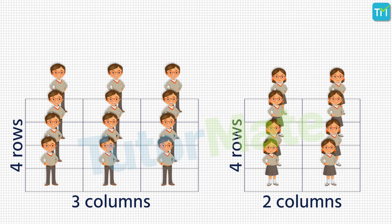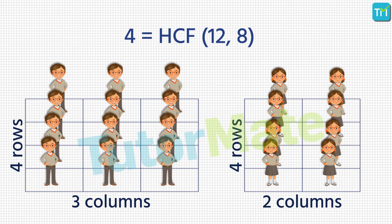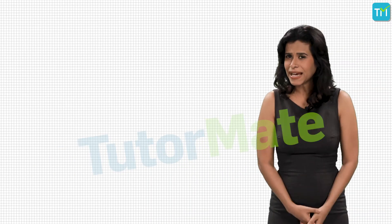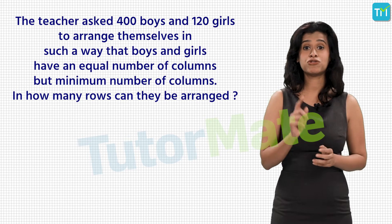That gives a total of 5 columns. We can't divide them into 5, 6, 7, or 8 rows because that would result in unequal rows. So to fulfill all conditions, we divide 12 boys and 8 girls into 4 rows each, giving 3 columns of boys and 2 columns of girls. This gives us 4 as the HCF (highest common factor) of 12 and 8. With that in mind, let's go back to our original question.